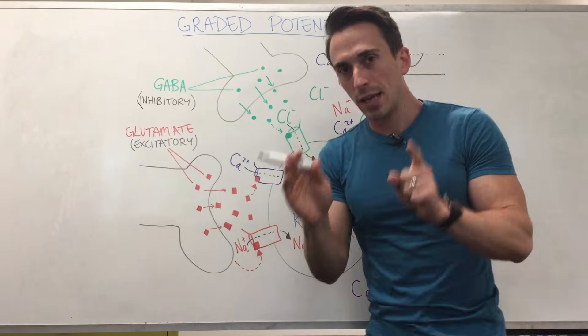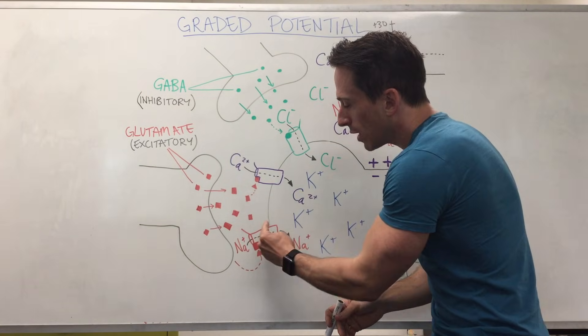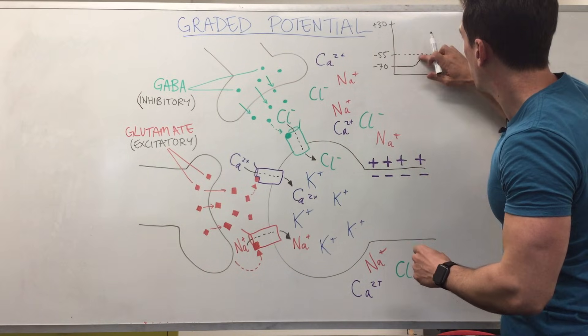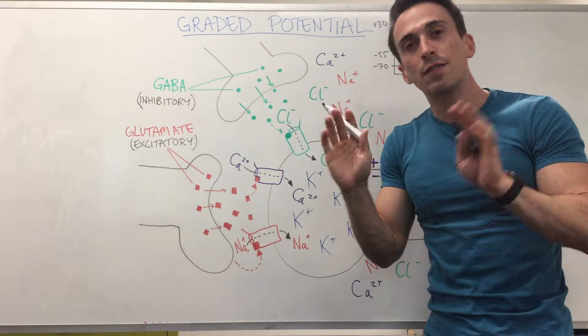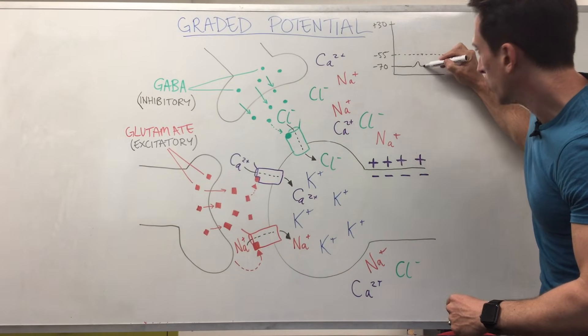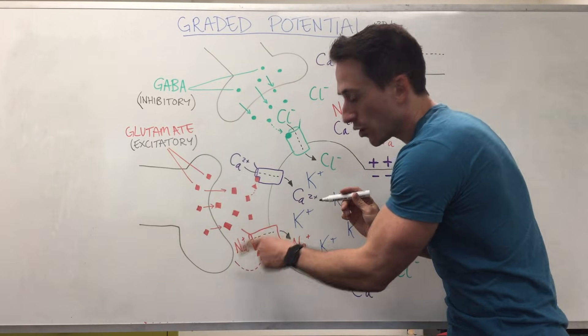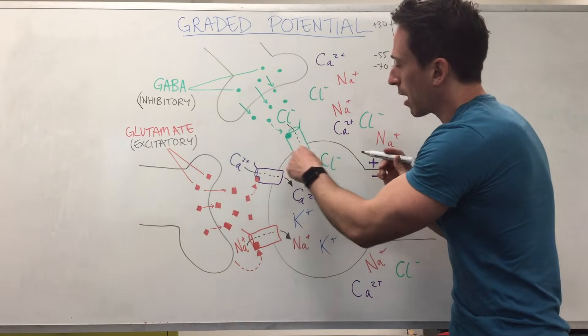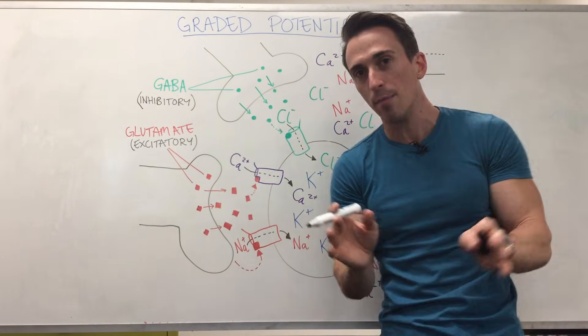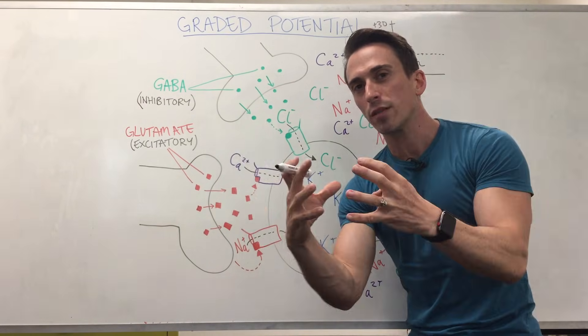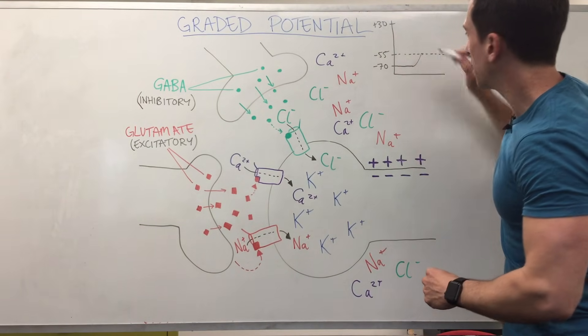Now this is where we start to make graded potentials. If only a few sodium channels open up, then this only starts to get a little bit positive and if that's it, it drops back down to its normal negative 70. If a couple of sodium channels open up here and here and here at the same time, then you add up all the positive charges that they're letting in in one go and it'll hit the negative 55. That's what we call spatial summation.